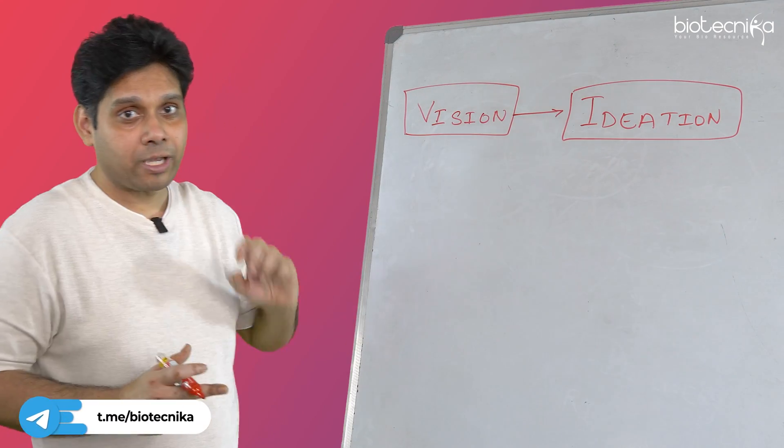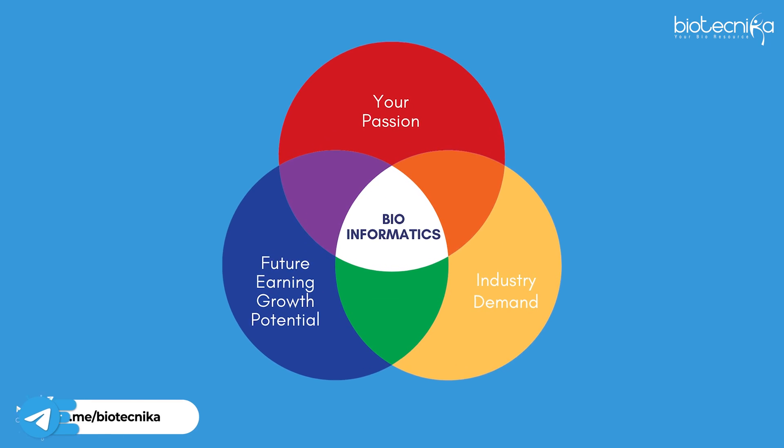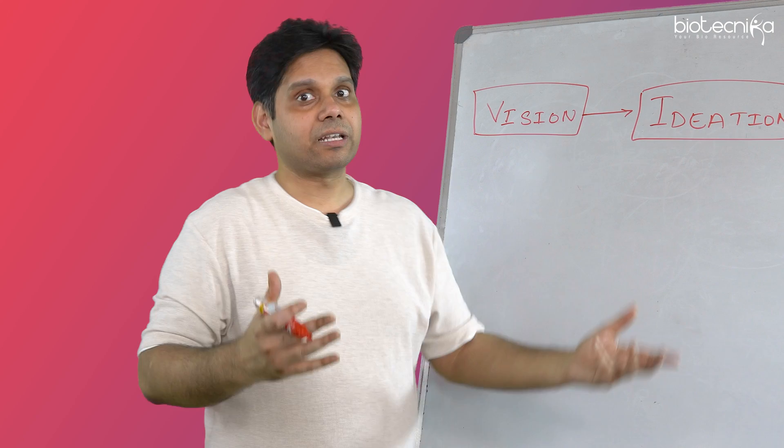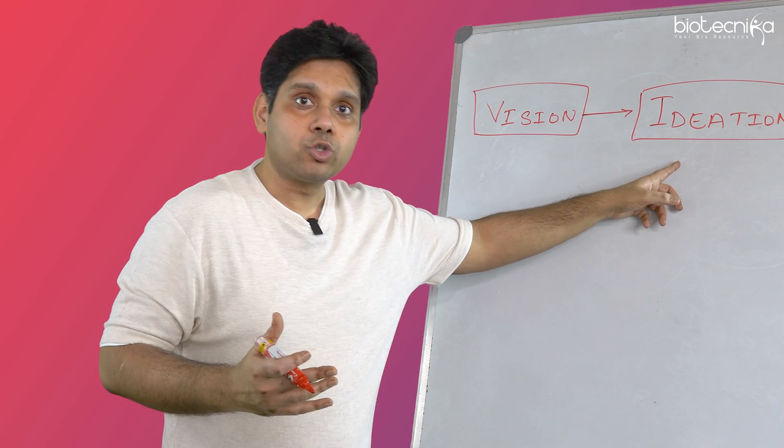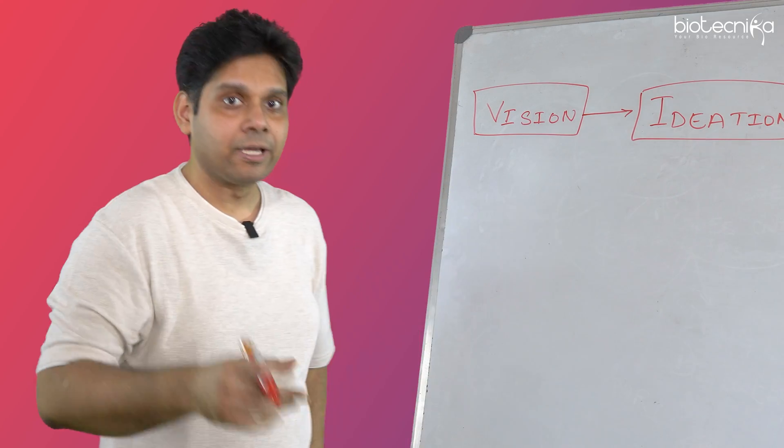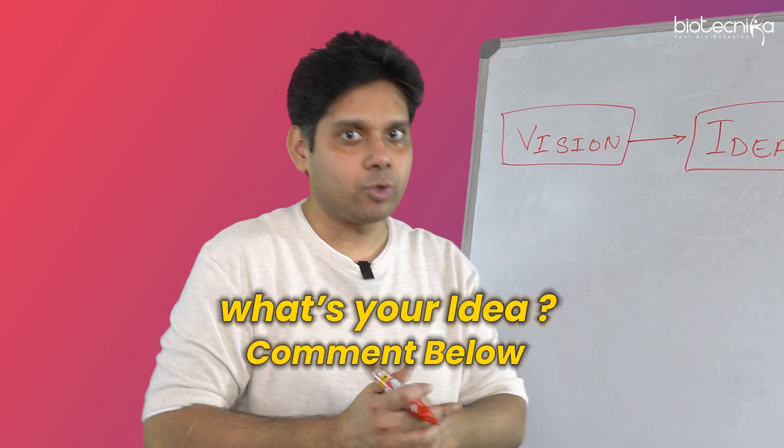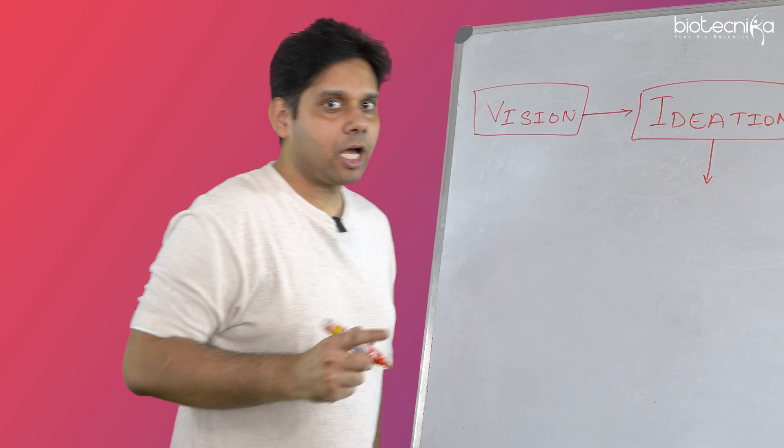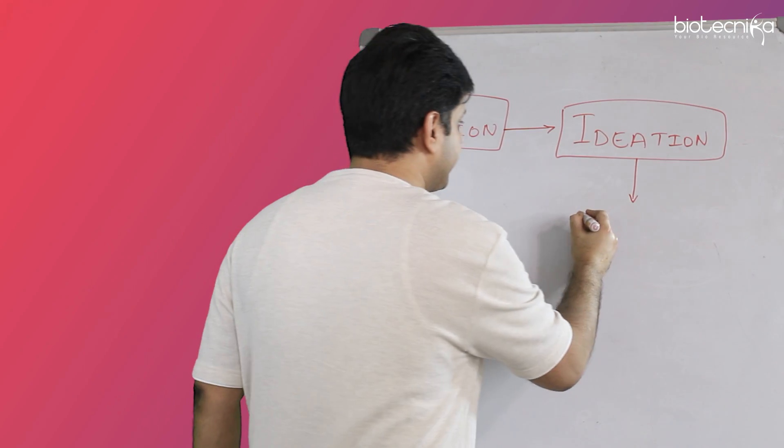Now, you have to pick one idea out of this. And that is where the previous video I made, where I have shown you four Venn diagrams, where we said, what is the industry demand? What do you love? What will keep giving you money forever? And it will never go out of fashion. That you have to choose. So, that is the idea you have to choose. Let me know in the comment section what idea you have. The next thing which we will have is, once you have the idea, then you will need the direction.